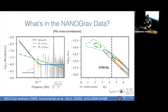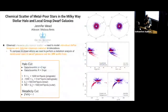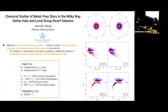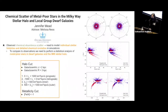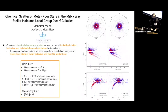Our next speaker is Jennifer Mead. Hi, everyone. My name is Jennifer Mead. I'm a second-year graduate student at Columbia University. I have recently started a new project with Melissa Ness on trying to statistically quantify the chemical scatter of metal-poor stars in both local group dwarf galaxies and in the Milky Way's stellar halo.